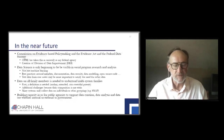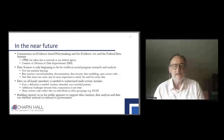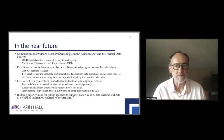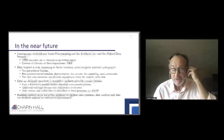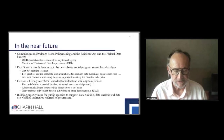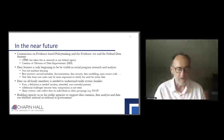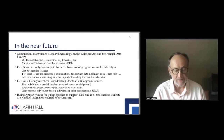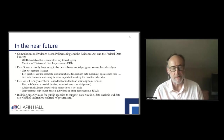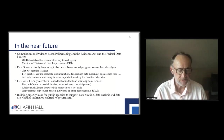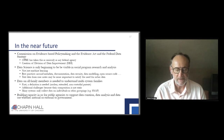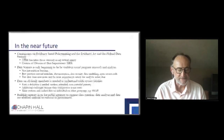In the near future, we have this context: we now have the Commission on Evidence-Based Policy, the Evidence Act, and the Federal Data Strategy. That's going to change how federal agencies operate and how they deal with their data. OPRE in particular has taken this seriously for many years. The creation of the Division of Data Improvement reflects this. Data science is only beginning to be visible in social program research and analysis — not just machine learning, but also the production of metadata, better documentation around data security, data modeling, and open source code. Text data is going to be important to satisfy the needs for richer data.